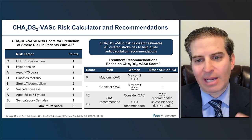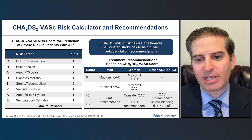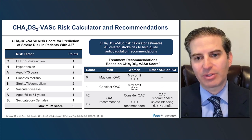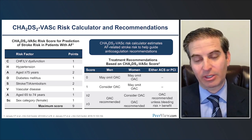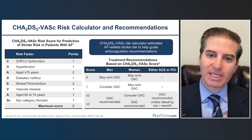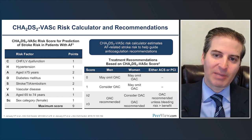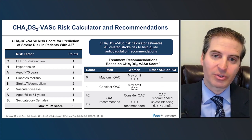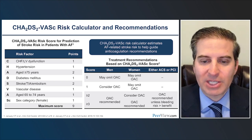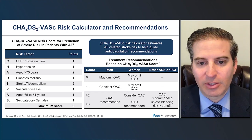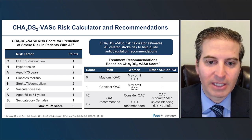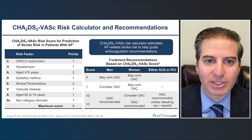One thing I'll use as a tiebreaker for borderline patients is NT-proBNP. There's data showing that when you risk-stratify patients across CHADS-VASc scores and look at NT-proBNP, as the NT-proBNP goes up, the risk of stroke goes up within a specific CHADS-VASc score. So for patients where you're on the borderline trying to decide, NT-proBNP can certainly be a tiebreaker.